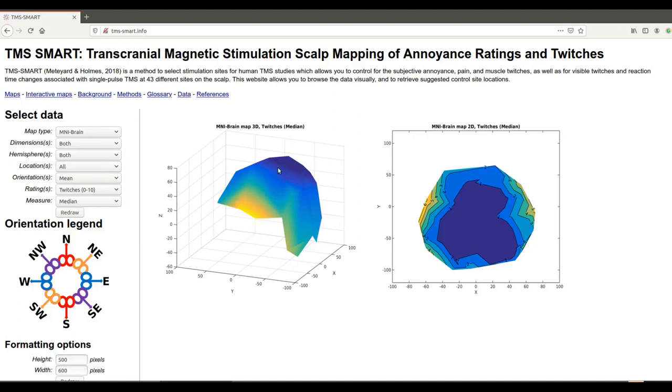And as you can probably see from these colors there's a big difference in twitchiness. This is a map of how twitchy TMS feels on the scalp and it's very twitchy down by the face and the ears and the eyes, and it's not twitchy at all up on top of the head near the vertex or near the parietal cortex.